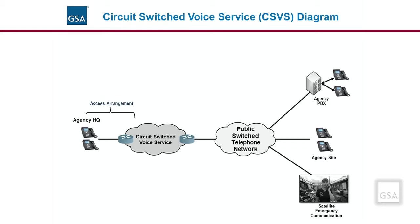This slide shows a high-level network diagram of circuit-switched voice service. CSVS supports voice calls, whether initiated from on-net or off-net locations, to be connected to all on-net and off-net locations by direct dialing throughout the U.S. During a circuit-switched call, a dedicated channel, or circuit, is established through the PSTN for the duration of a transmission. Since a dedicated continuous transmission path is established, this method is suitable for long, continuous transmission.